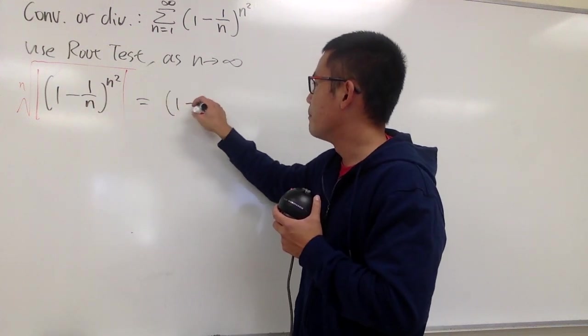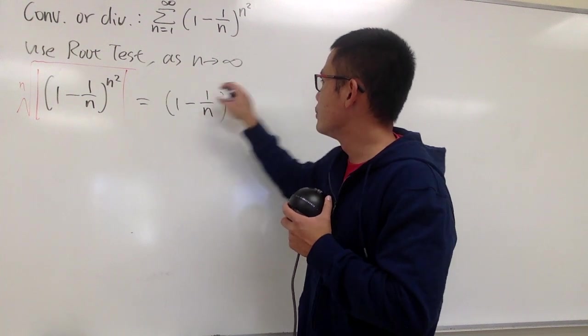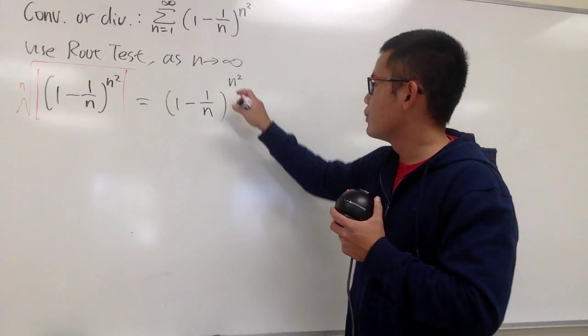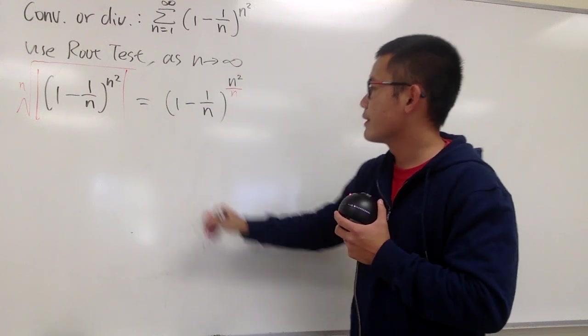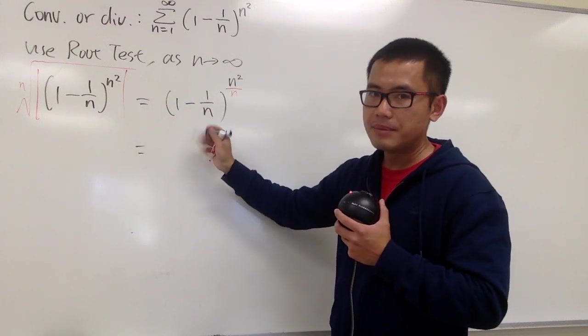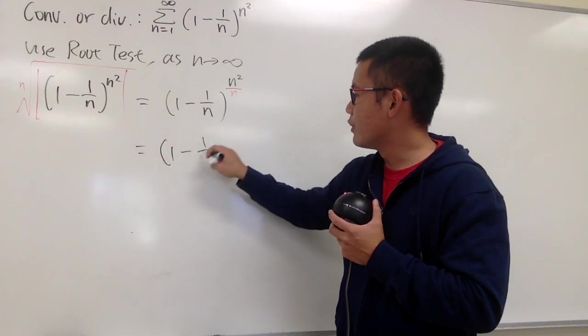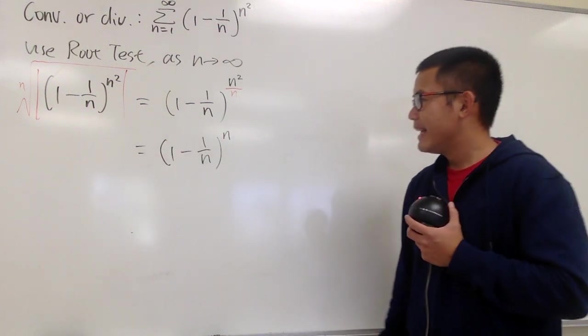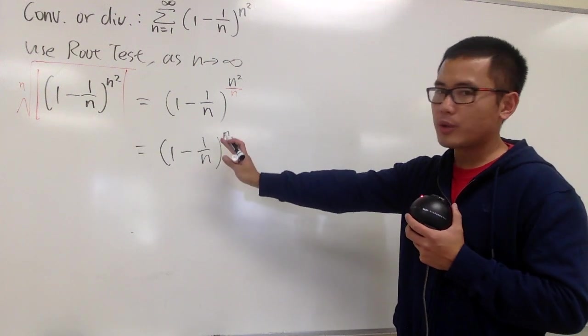And you have this, 1 minus 1 over n raised to the n squared power, and the n-th root tells us that we have to divide this by n. And now, this is the same as 1 minus 1 over n raised to the n power. And we have done the algebra right here.